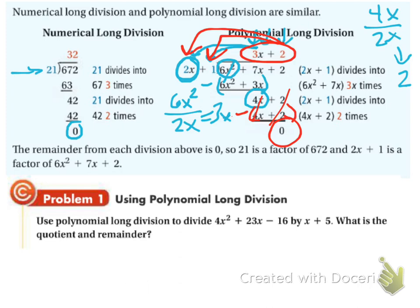You're going to stop when you can't take the first term and divide it into this anymore. The remainder from each division above is 0. So 21 is a factor of 672, and 2x plus 1 is a factor of 6x squared plus 7x plus 2. What that means is 2x plus 1 goes into 6x squared plus 7x plus 2 evenly — you get a 0 remainder. If you get a remainder of anything other than 0, then 2x plus 1 would not be a factor.